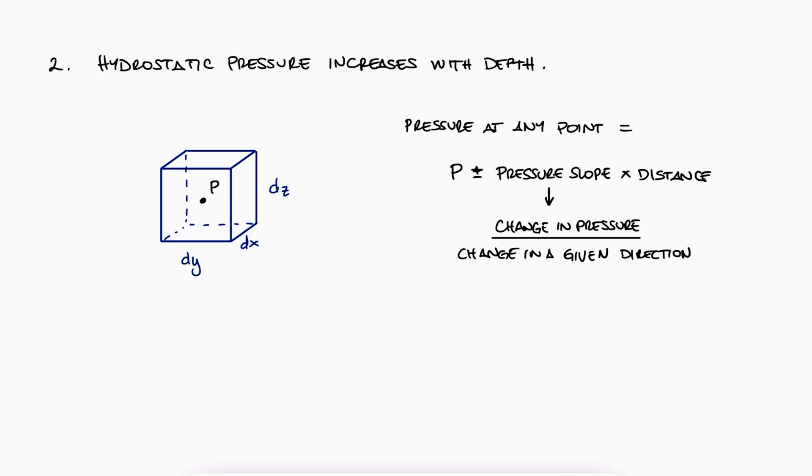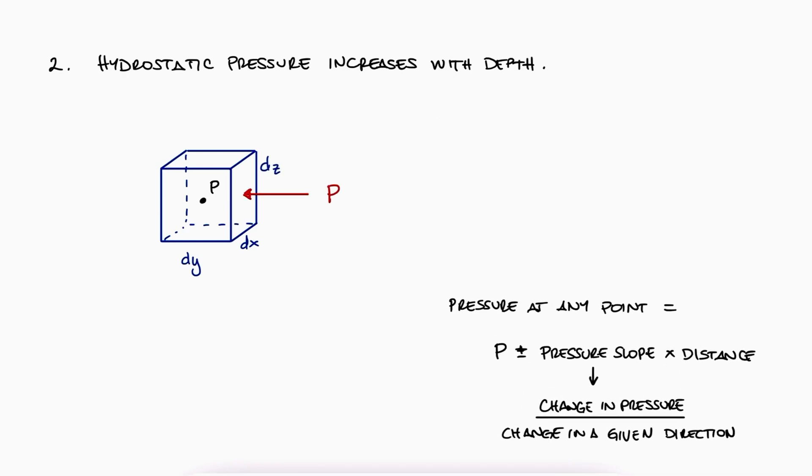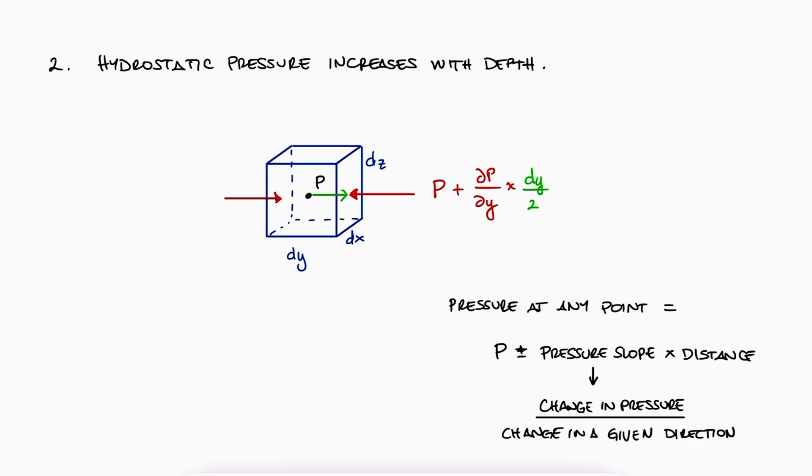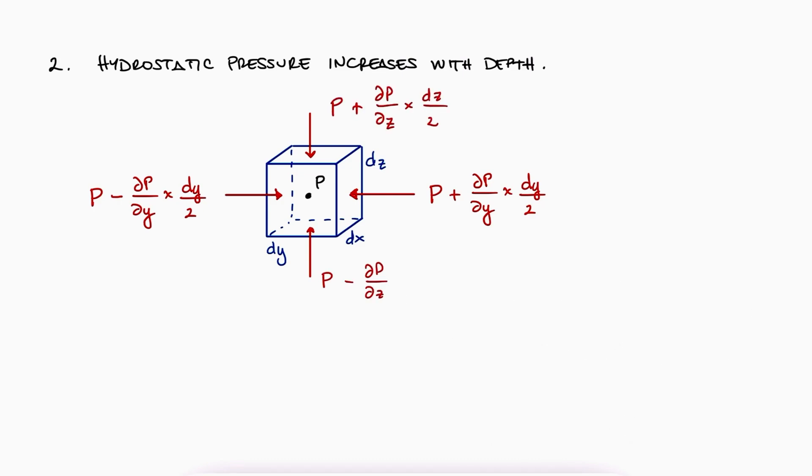This means, for example, that for the right face, we have a pressure P plus however much the pressure has changed in the y direction, when advancing a length equal to dy over 2. It would be the same except for a negative sign on the left face. And similar terms, but with the z terms on the top and the bottom faces. Each of these times the area they are affecting would be the force values. Remember force is equal to pressure times area. Additional to these forces and the ones in the x direction not shown here, we would have the weight of the fluid element.